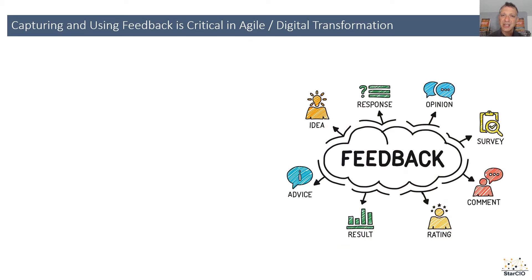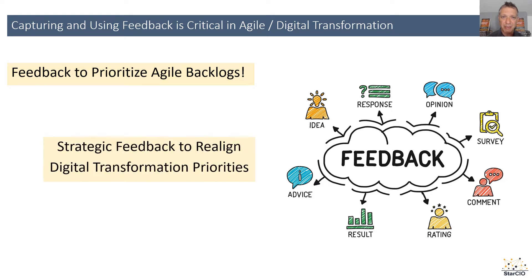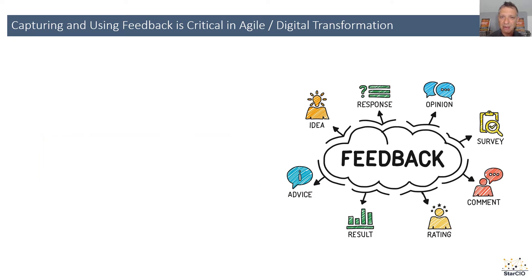Feedback is really important in agile programs. We use feedback to reprioritize our backlogs and to realign our priorities for releases. And in digital transformation programs, the same is true — we use feedback to govern and decide new changing priorities, new types of projects we want to go after, and where the market is going.